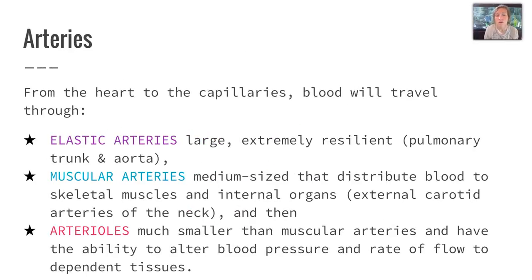From the heart to the capillaries, blood will travel through first elastic arteries, which are large and extremely resilient, like our pulmonary trunk and aorta. Then your muscular arteries, which are medium-sized and distribute blood to the skeletal muscles and internal organs — a good example would be the external carotid arteries of the neck. And finally to our arterioles, which are much smaller than the muscular arteries and have the ability to alter blood pressure and the rate of flow to dependent tissues.